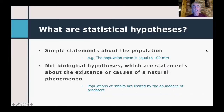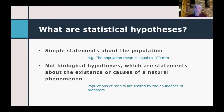So first of all, what are statistical hypotheses? Statistical hypotheses are just simple statements about our population. For example: the population mean is equal to 100 millimeters. These are pretty different from biological hypotheses, which are usually statements about the existence or causes of a particular natural phenomenon, usually implying some sort of underlying biological mechanism. For example: populations of rabbits are limited by the abundance of predators.